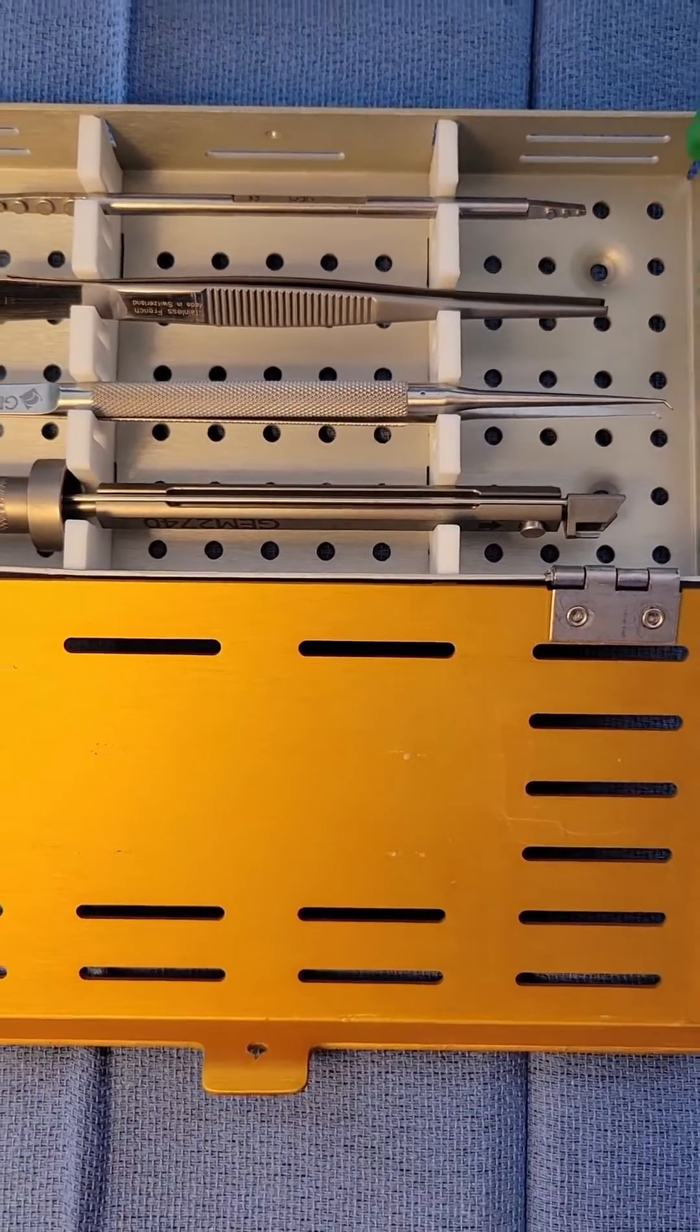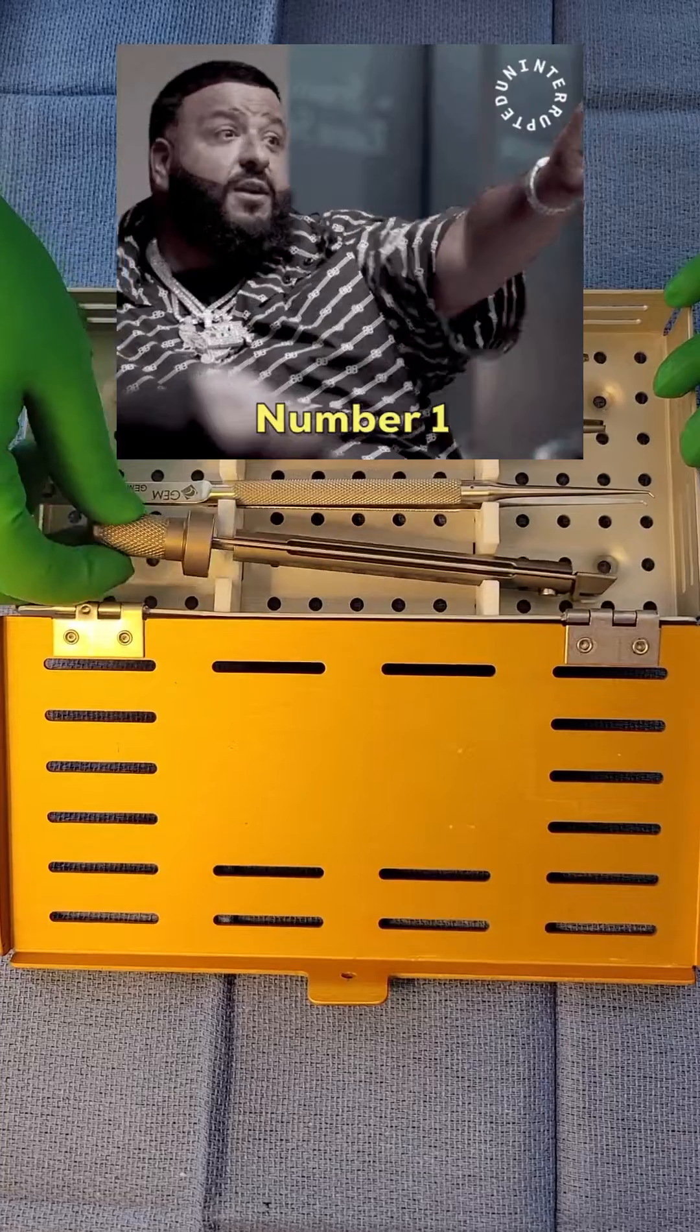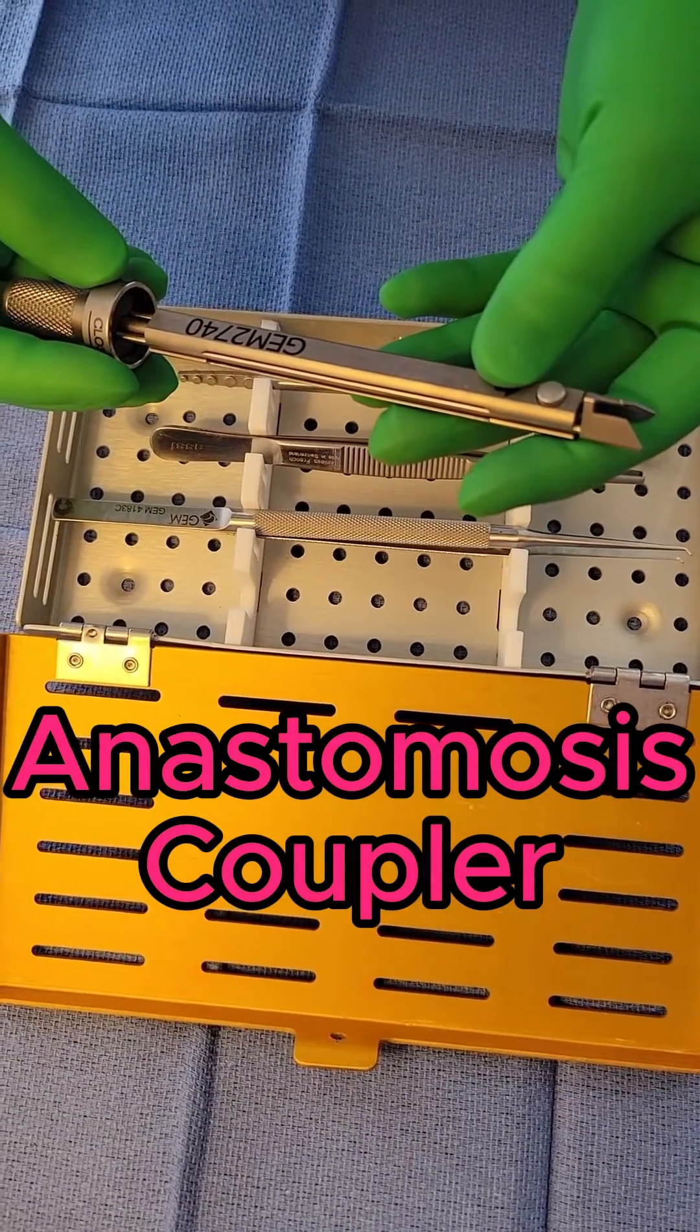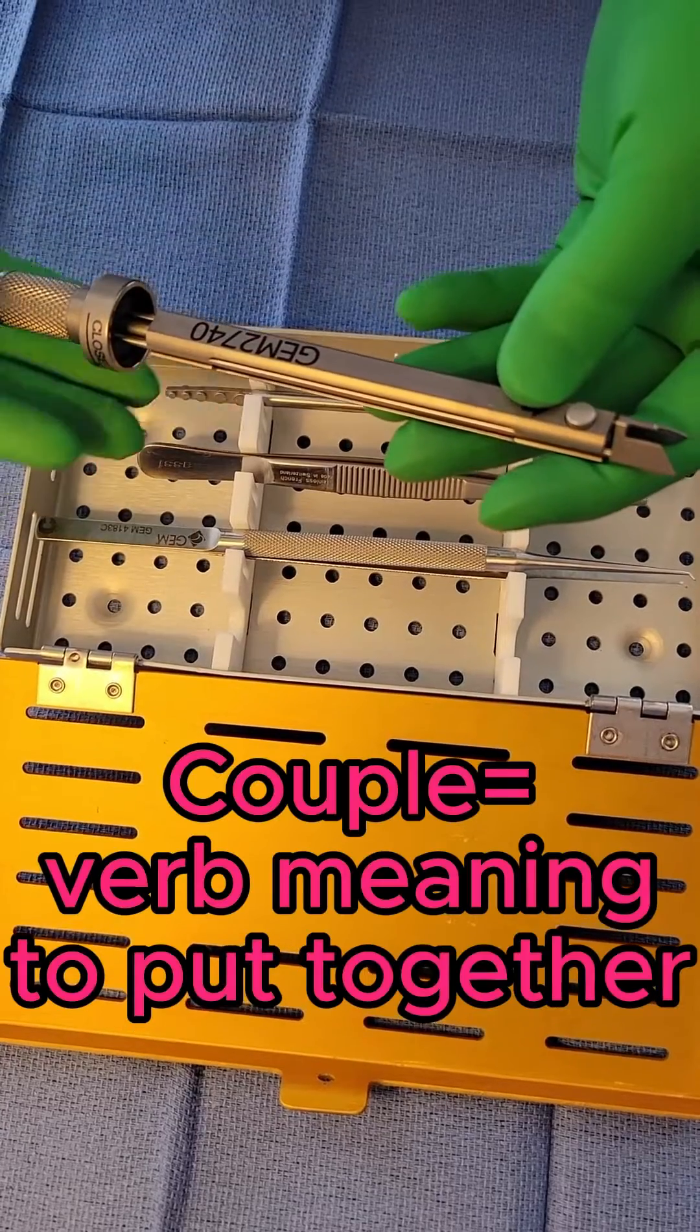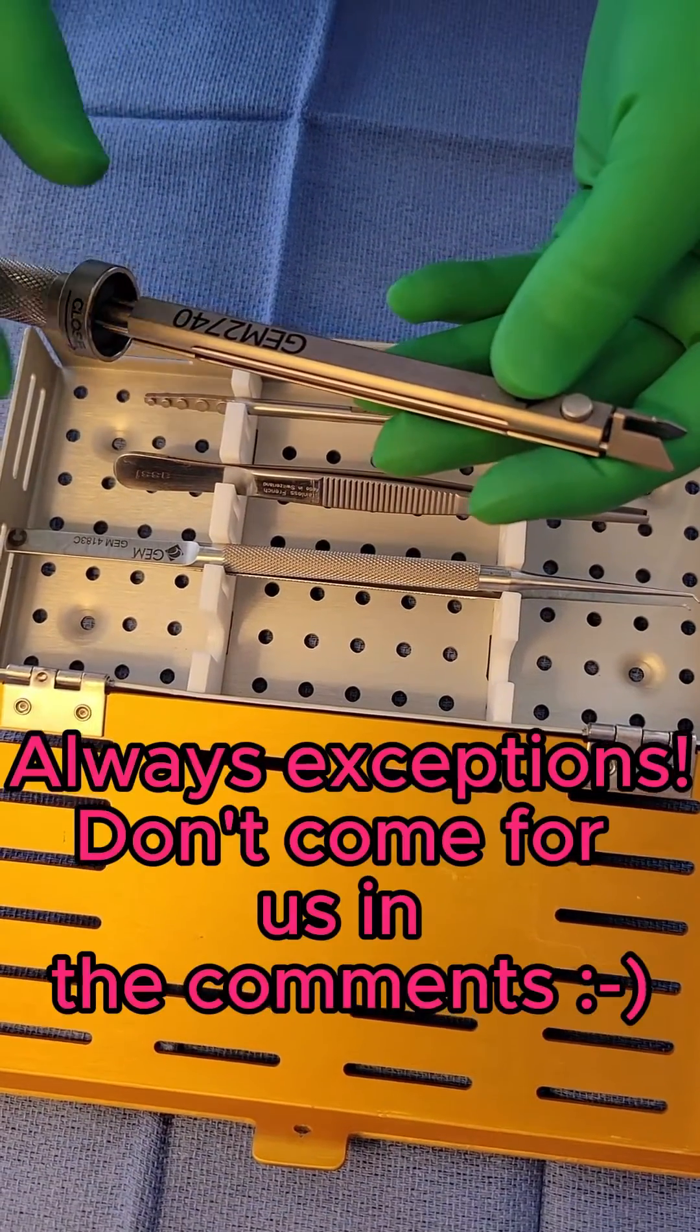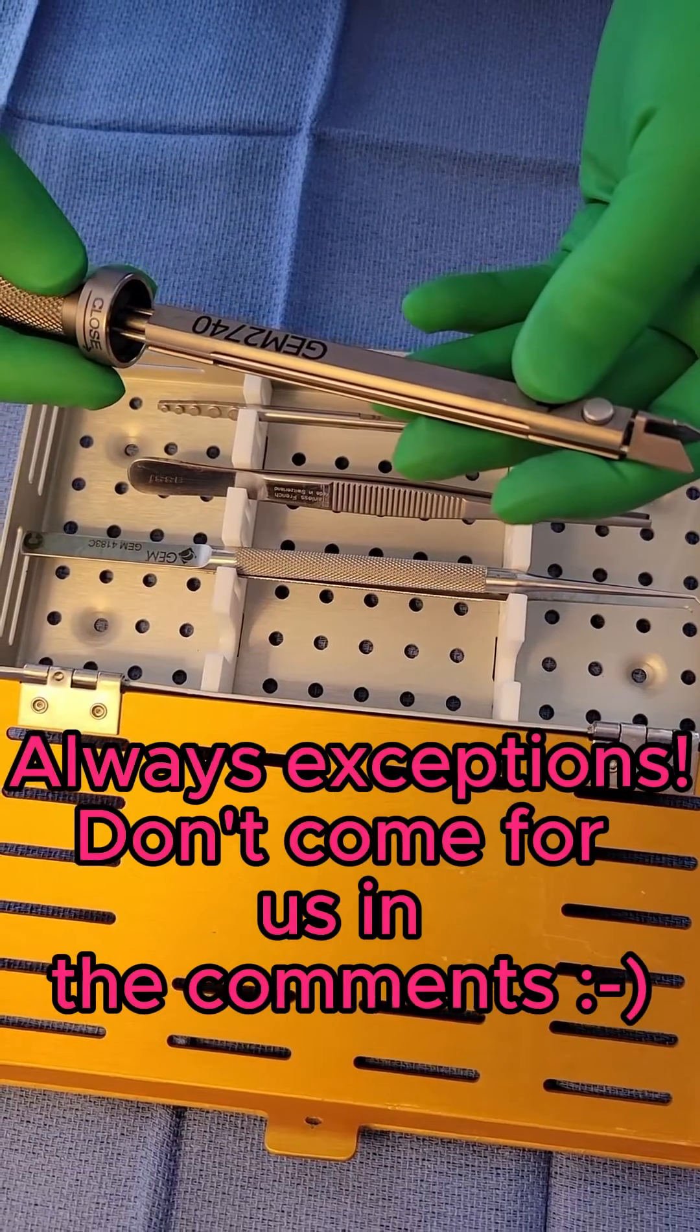This set typically comes in four pieces. The first instrument is the actual anastomosis coupling device. This is what is actually used to couple or put together the veins. I say veins because typically arteries are way too rigid to use this with, but some people do use it for that as well.